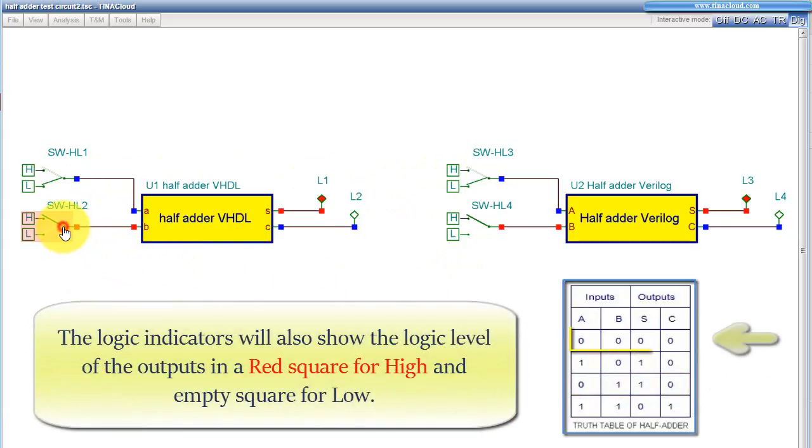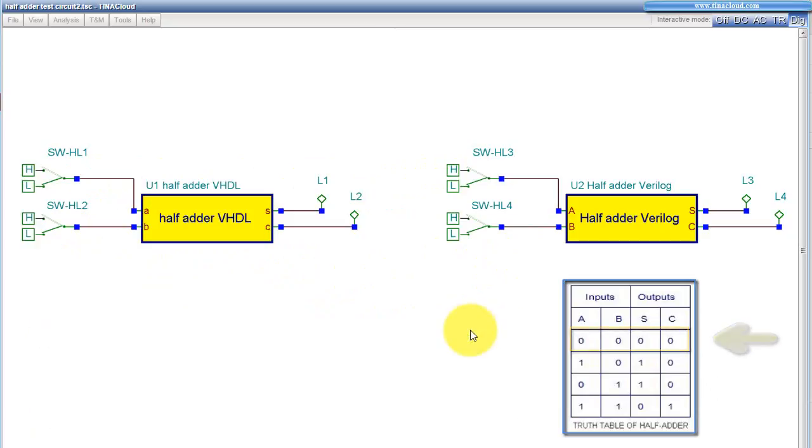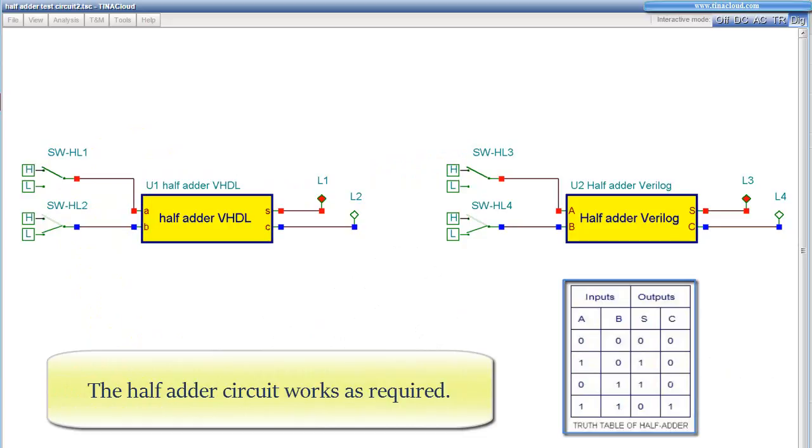The logic indicators will also show the logic level of the outputs in a red square for High and empty square for Low. And the HalfAdder circuit works as required.